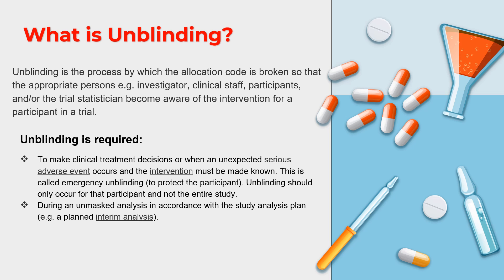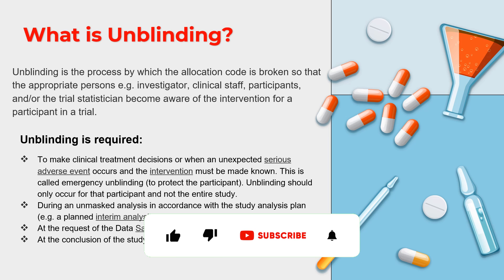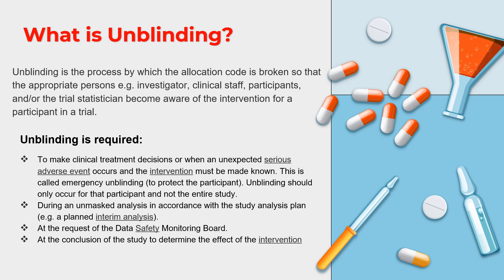Unblinding is also required when performing an unmasked analysis — where the data or treatment given to subjects must be reviewed in accordance with the study analysis plan or during interim analysis. Additionally, unblinding is required when analyzing Data Safety Monitoring Board (DSMB) reports — to understand whether adverse events or serious adverse events have any correlation to the study molecule and resulting outcome. Finally, at the conclusion of the study, all data sets must be unblinded so that the statistician can have a clear distinction between the efficacy of the treatment and whether the intervention made any positive health outcomes.